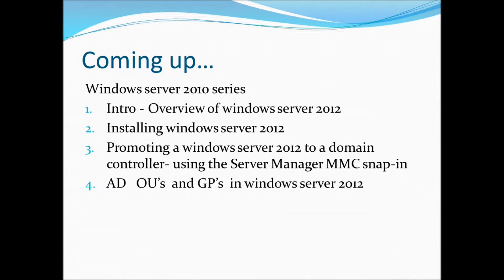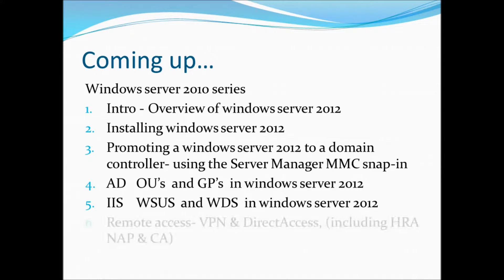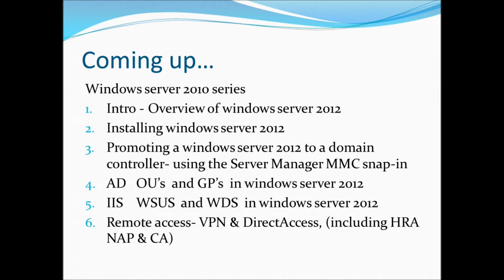The fifth will cover Internet Information Services, Windows Server Update Services and Windows Deployment Service in Windows Server 2012. The sixth and final episode will cover remote access, virtual private networks and Direct Access, including Health Registration Authority, Network Area Protection and Certificate Authority.